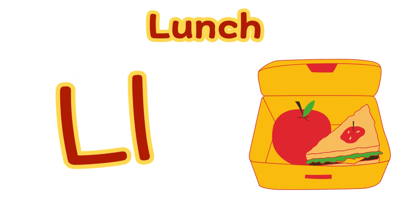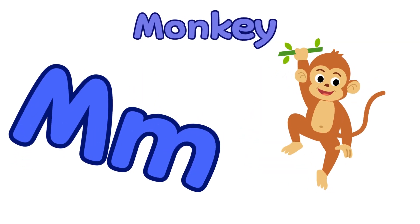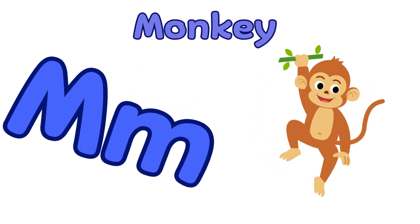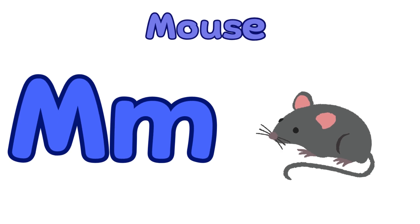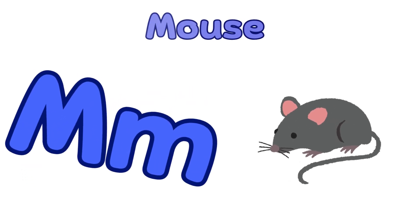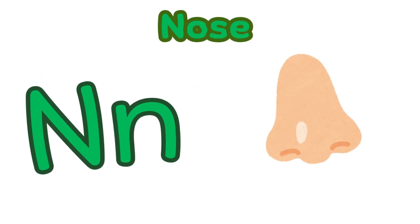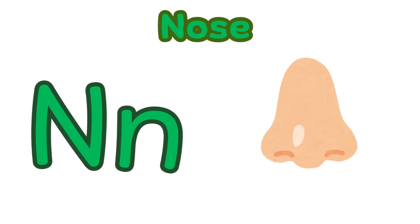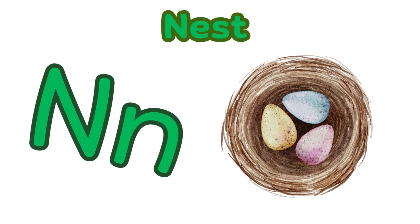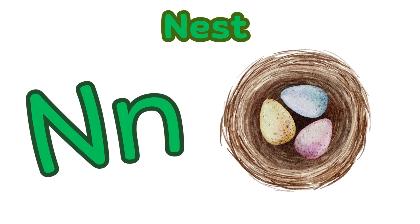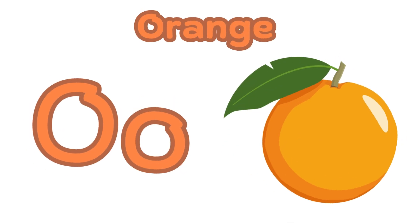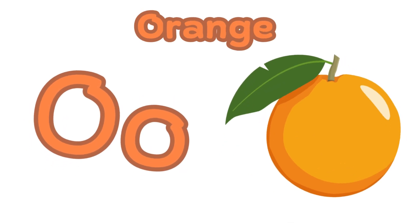L is for lunch. L, l, l — lunch. M is for monkey. M, m, m — monkey. M is for mouse. N is for nose. N, n, n — nose. N is for nest. N, n, n — nest.